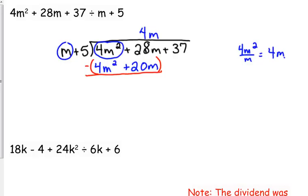Multiply. 4m times m is 4m squared. We're finally not multiplying by 1 anymore. 4m times 5 is 20m. I'm multiplying it by both terms in the divisor, the m and the plus 5. Up to this point, it's always been plus 1. But, now it's plus 5. So, that's why we get something different. 4 minus 4 is 0. 28 minus 20 is 8. Bring down the 37.